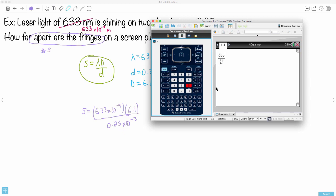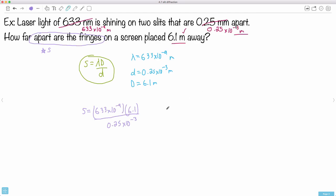I'll get out my calculator and say 633 times 10 to the minus 9, all that times 6.1, all that divided by 0.25 times 10 to the minus 3. My answer then is 0.015445. I'm going to write that down: 0.015445.